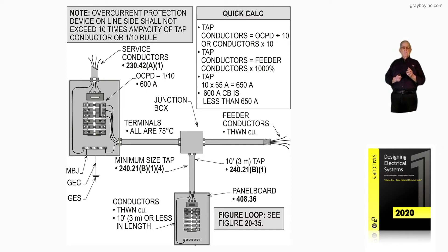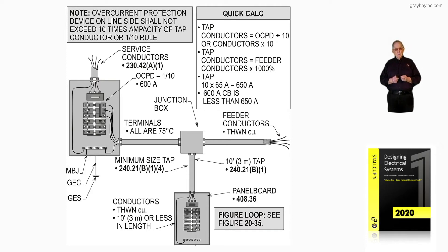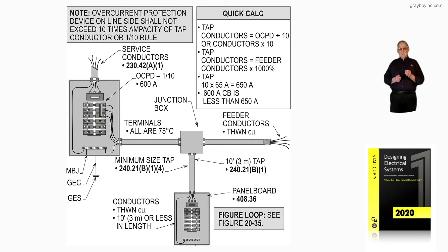If you happen to have a main feeding a transformer, and you're tapping off the secondary of that transformer with transformer secondary conductors, then we would go to 240.21C. If it was an industrial-type facility supervised with qualified people, then you'd look at 240.92C.